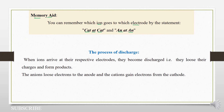So we mean cations — anions go to the cathode, meaning the positive charges go to the negative electrode.